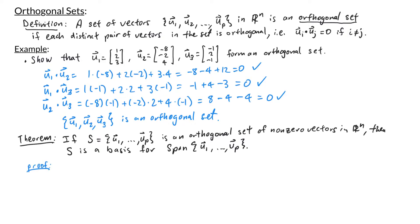To prove this, to show that a set is a basis for a subspace we need two things: the set must be linearly independent, and the span of the set must equal the subspace. The second condition is automatically satisfied since our subspace is the span of the vectors in S. So we just need to show linear independence by considering c1*u1 + c2*u2 + ... + cp*up = 0, and showing this only has the trivial solution.